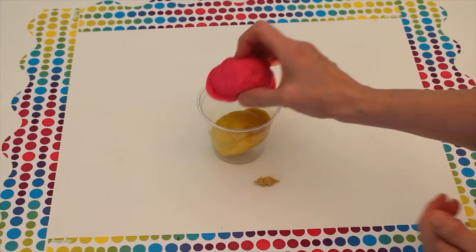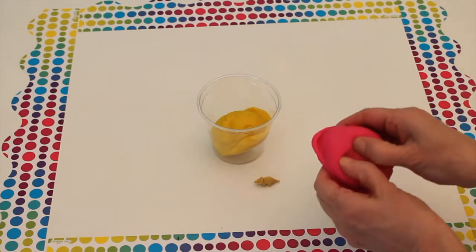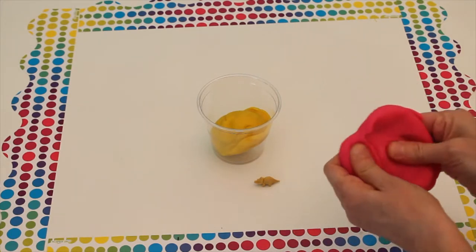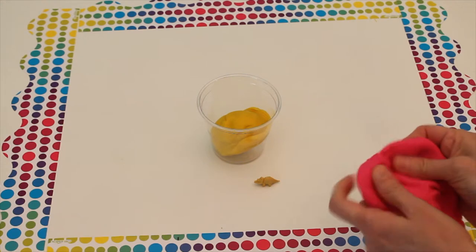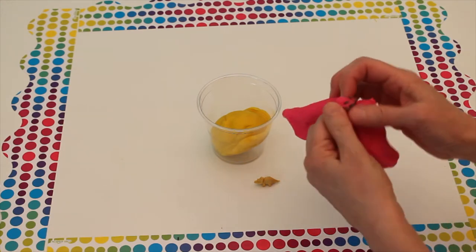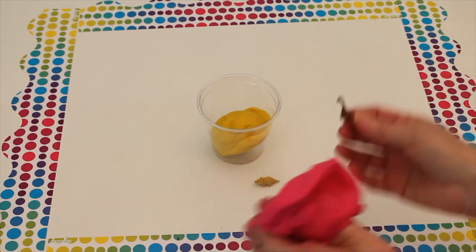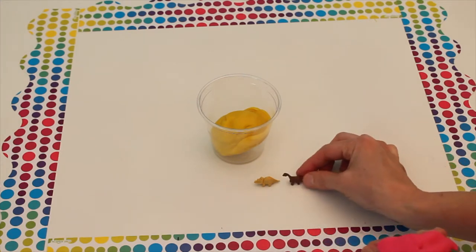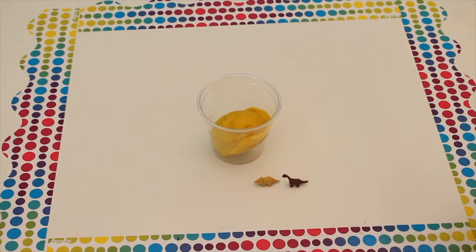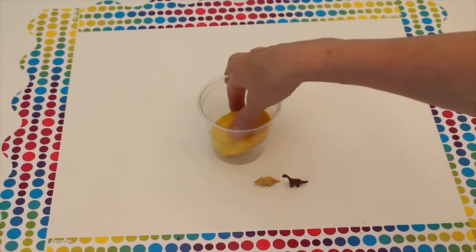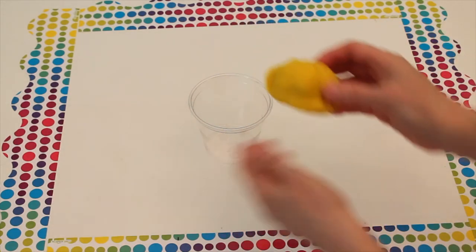Now let's open the pink scoop and see what we have here. Oh, he's hiding over there. There it is. There's a brown dinosaur and now let's see what's in the yellow scoop.